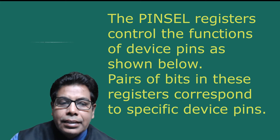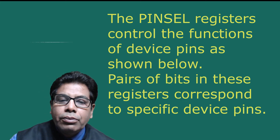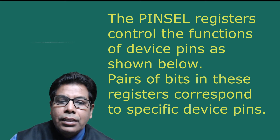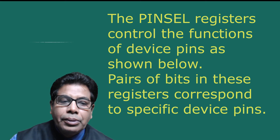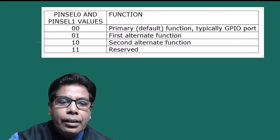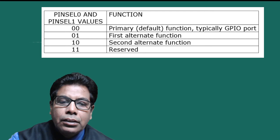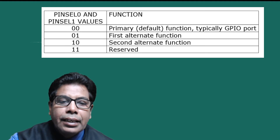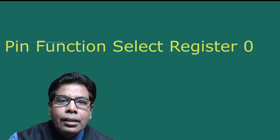The pin select registers control the functions of device pins. Pairs of bits in these registers correspond to specific device pins. As shown in the table: a value of 00 selects the primary default function — the GPIO port; 01 selects the first alternate function; 10 selects the second alternate function; and 11 is reserved.